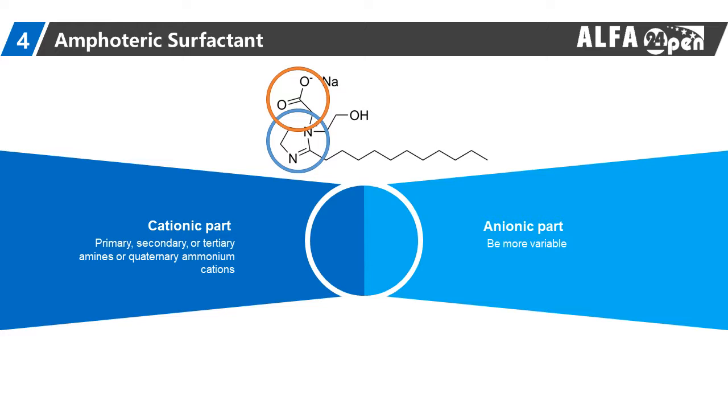The most common biological amphoteric surfactants have a phosphate anion with an amine or ammonium, such as the phospholipids phosphatidylserine, phosphatidylethanolamine, and sphingomyelins.